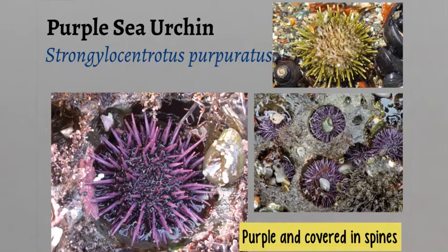Purple sea urchins are most common in the low tide zone in the rocky intertidal. These urchins often live in protective beds and cavities in the rock that the growing urchins enlarge with their teeth and spines. Color is one of the last things you want to use to ID species, since sometimes individuals of one species can vary in color.